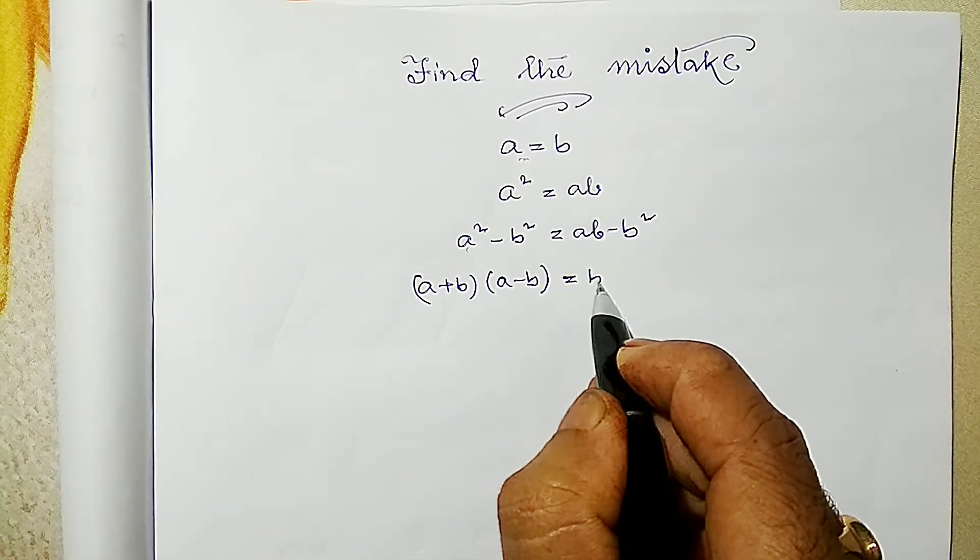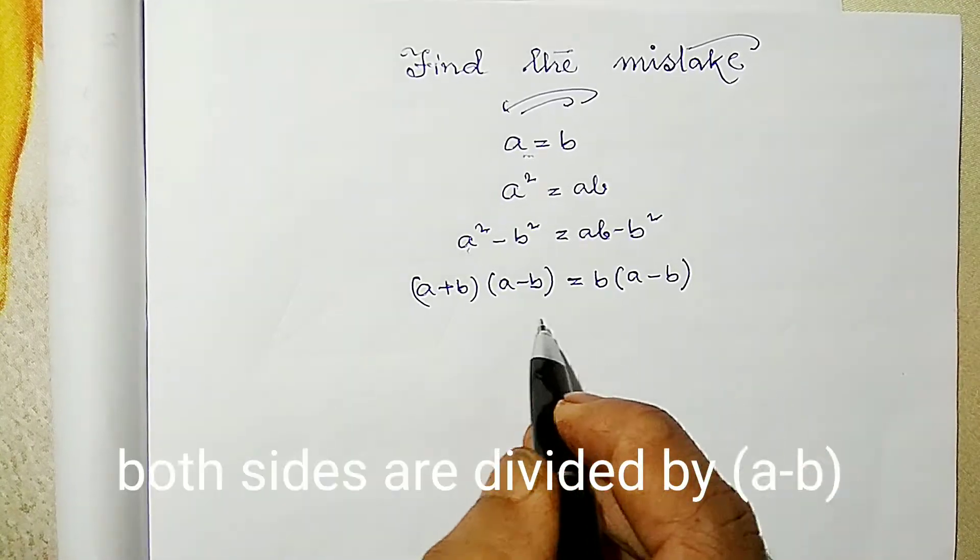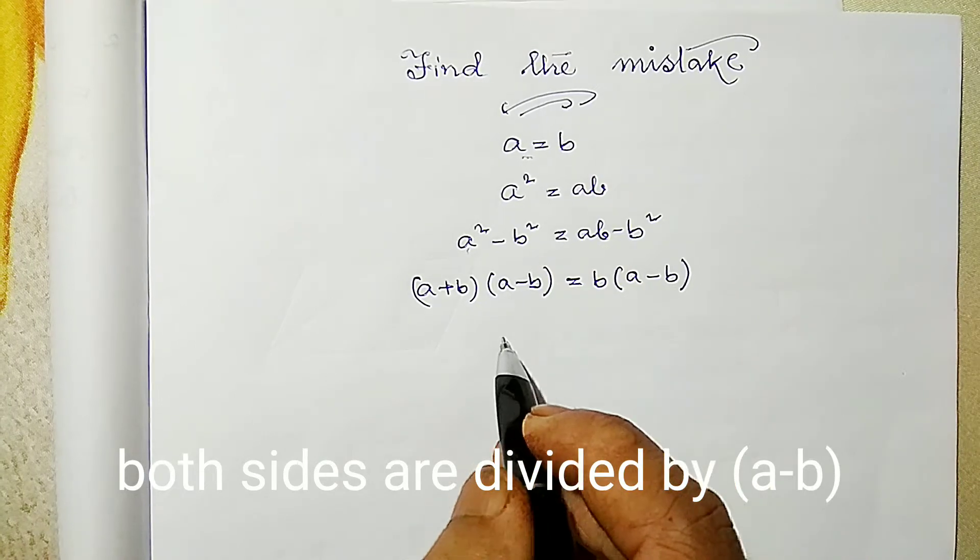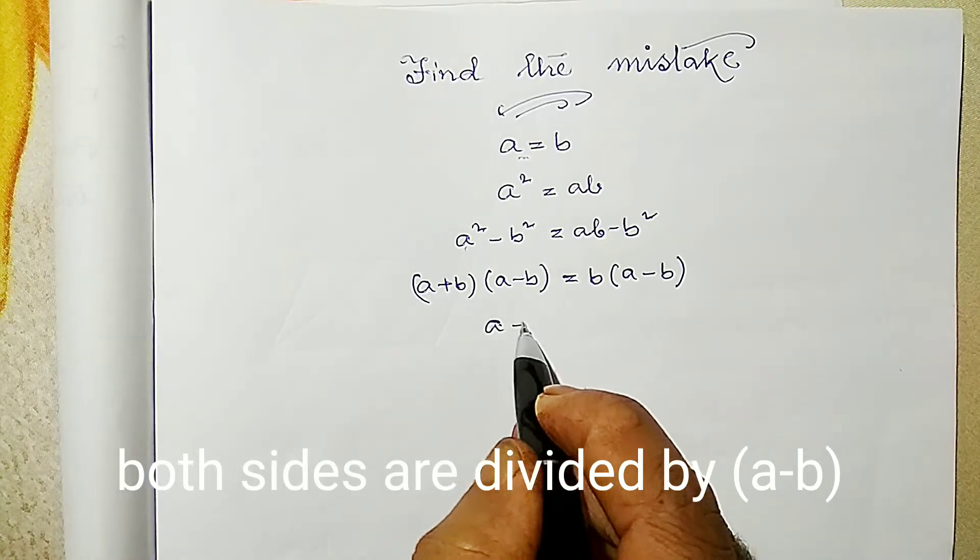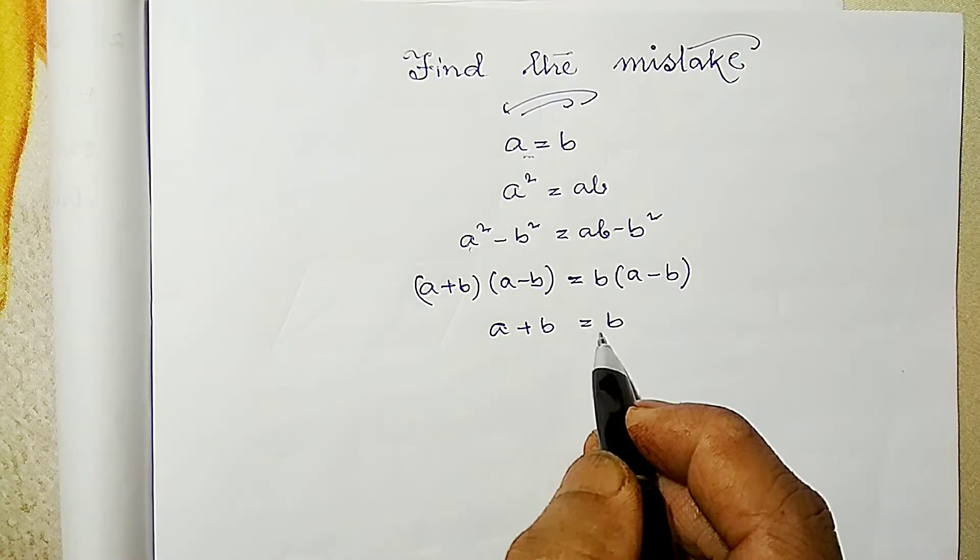Now since a minus b are present in both the sides, I can cancel. As a result I got a plus b equals to b. Okay, a plus b equals to b.